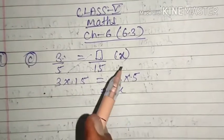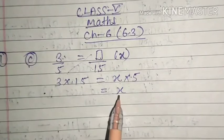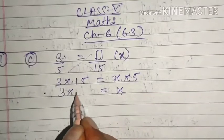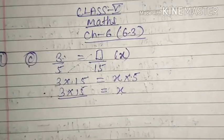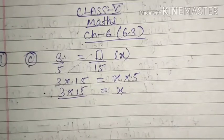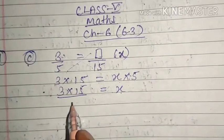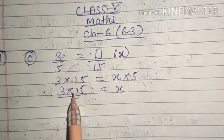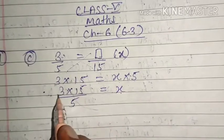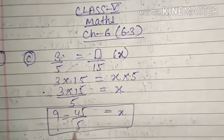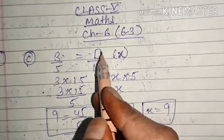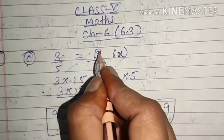If this number is x, then: 15 into x equals 3 into 5, because they are equivalent fractions and the products of cross multiplication must be equal. To find x, bring 5 to the other side — since it is multiplication here, it becomes division there. So x equals 3 into 15 upon 5, which is 45 upon 5, equal to 9. So the value of x is 9, meaning we write 9 in the box.